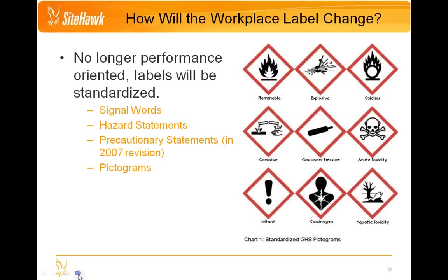Now let's talk about how the workplace labels are going to change. Labels will no longer be performance-oriented but will now be standardized. Every GHS physical, health, and environmental hazard classification has a specific signal word associated with it, hazard statements, precautionary statements, and pictograms. Based upon the new GHS criteria, there are now only going to be two signal words — danger and warning — as opposed to the multiple signal words under ANSI. There is a complete listing of all hazard statements and precautionary statements within the UN GHS Purple Book, and it's important to note that each hazard statement and precautionary statement has a corresponding H or P code, similar to Europe's R and S phrases.